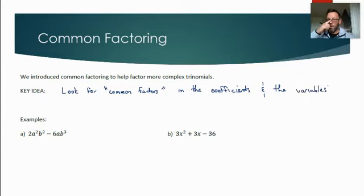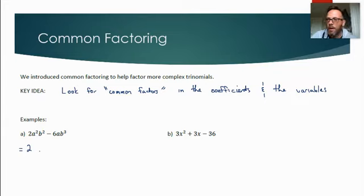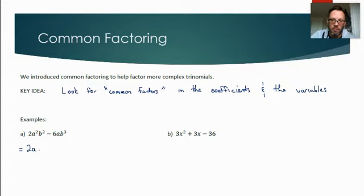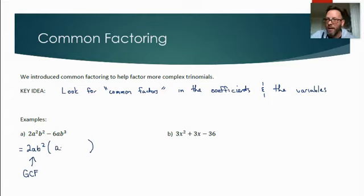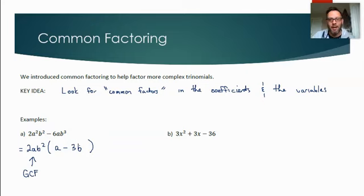Looking at example (a): the coefficients 2 and 6 both divide by 2. Looking at the variables, the first term has a-squared and the second has a — they share one a. The first term has b-squared and the second has b-cubed — they share two b's. So 2ab-squared is our greatest common factor. Dividing it out leaves just a from the first term, and negative 3b from the second: 2ab-squared times (a minus 3b).